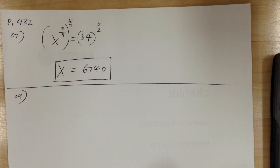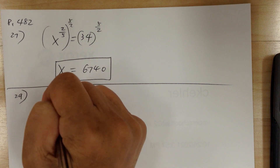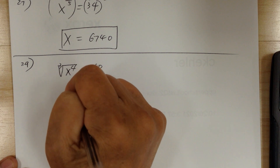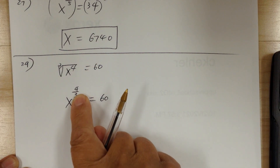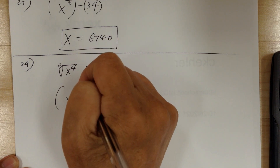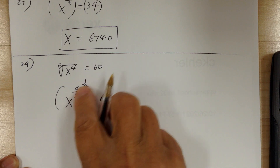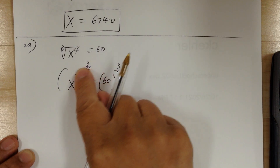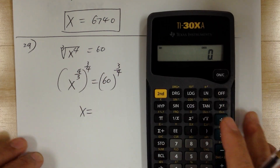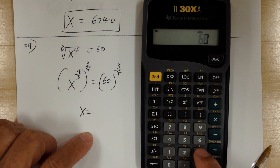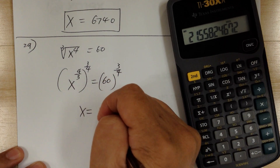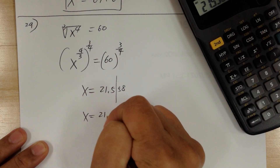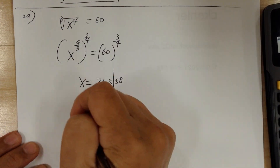Number 29: cube root of x to the fourth equals 60. First, convert to exponential form: x to the 4 over 3 equals 60. To get rid of the exponent, apply the third law and raise both sides to the 3 over 4 power — the reciprocal — so 4 over 3 times 3 over 4 becomes 1, giving x. Use your calculator: enter 60 to the 3 over 4 power, equal. This gives 21.558, and rounding to three significant digits — since 5 is 5 or more, round up — so x equals 21.6.